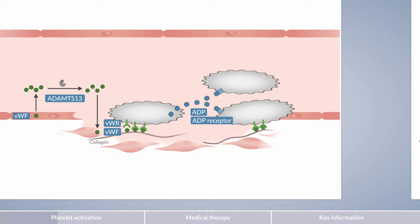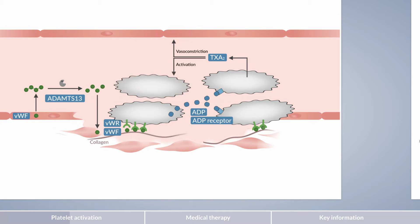A second chemical messenger released from platelets is thromboxane A2, or TXA2. Thromboxane A2 has two important functions. It acts on the blood vessel wall and strengthens vasoconstriction. Thromboxane A2 also activates additional platelets, which seal off the site of injury. From a pharmacological perspective, thromboxane A2 is synthesized by cyclooxygenase 1 in platelets. But let's get back to that later on in this episode.